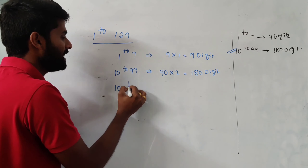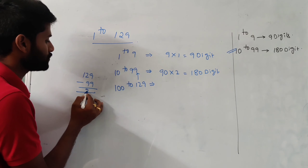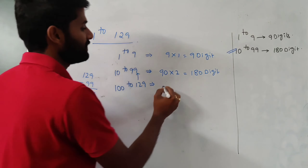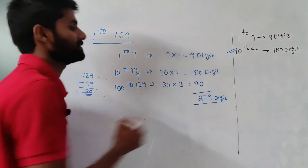One more example: from 1 to 39, find the number of digits. From 1 to 9 — single digit numbers — we use 9 into 1 equals 9 digits. From 10 to 39, the count of two-digit numbers is 39 minus 9 equals 30 numbers. Each uses two digits, so 30 into 2 equals 60. Total digits from 1 to 39: 9 plus 60 equals 69 digits.